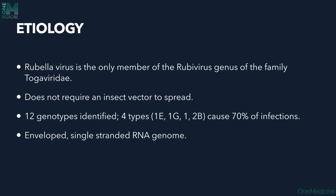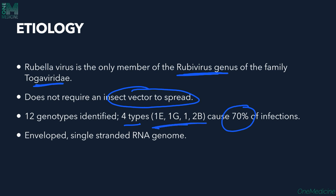Regarding etiology, the rubella virus is the only member of the Rubivirus genus, which belongs to the family Togaviridae. It does not require any vector to spread. Twelve genotypes have been identified; types 1g, 1 and 2b cause most infections — about 70% of cases. The virus is an enveloped single-stranded RNA virus.